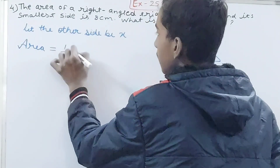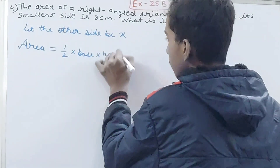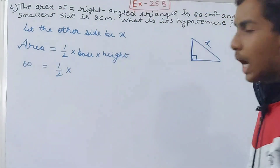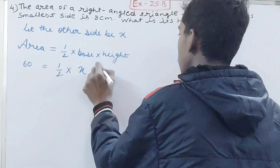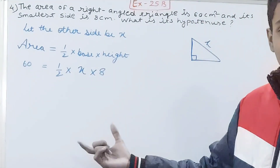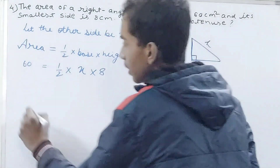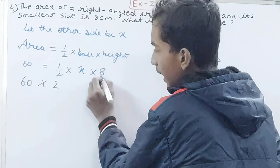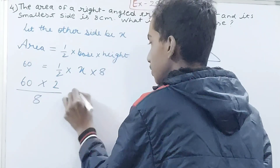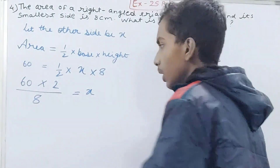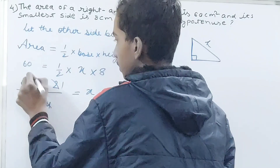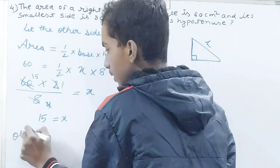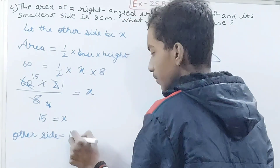Area is 1/2 into base into height — this we all know. So this will become: 60 = 1/2 × X × 8. Anything can be the base and anything the height. Now calculate the value of X: 60 × 2 divided by 8 equals X. Cancelling gives us X = 15. That means the other side is 15 centimeters.